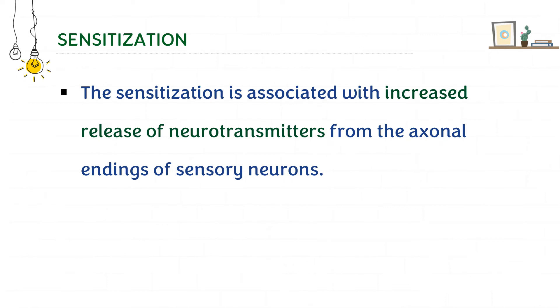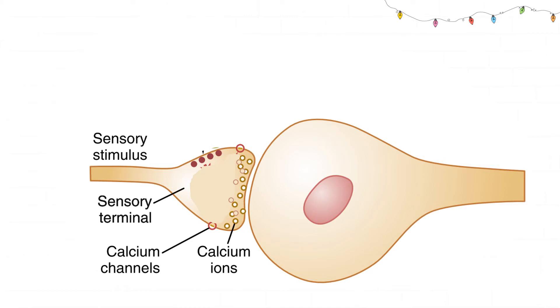And what is the mechanism of action? Sensitization is associated with an increased release of neurotransmitter from the axonal endings of the sensory neurons. So we will see this diagram. Here you can see that this is the synapse. This is the presynaptic neuron and this is the postsynaptic neuron. As I said before, when action potential travels down, there will be opening of calcium channels and release of neurotransmitter.